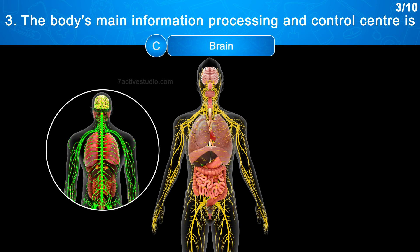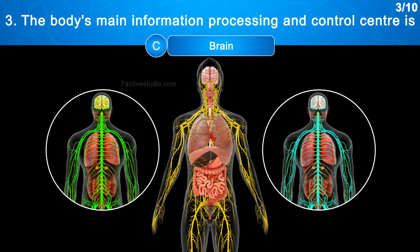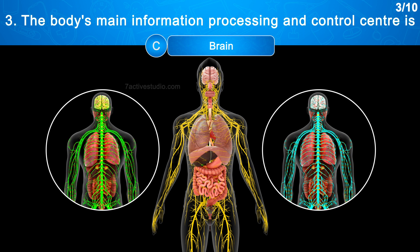The correct answer is Option C: Brain. Consider the brain to be a central computer that oversees all bodily operations. The rest of the nervous system functions as a network relaying messages from the brain to various regions of the body. The spinal cord, which goes from the brain down through the back, is responsible for this.